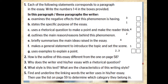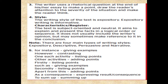Question 5: Find and underline the linking words the writer uses in the essay, then use the list on page 59 to determine which category they belong to. Examples include: 'For instance' — giving examples; 'However' — contrasting; 'One such activity' — listing points; 'Other activities' — adding points; 'Firstly' — listing points; 'Such as' — giving examples; 'Secondly' — listing points; 'Apart from this' — adding points; 'As a consequence' — expressing result or consequence; 'To sum up' — summing up.